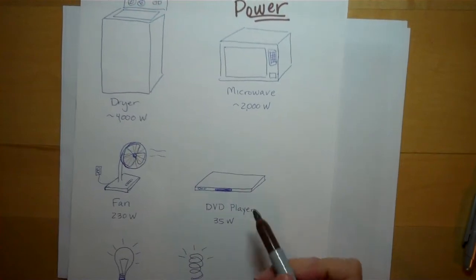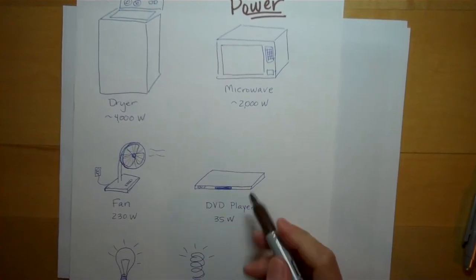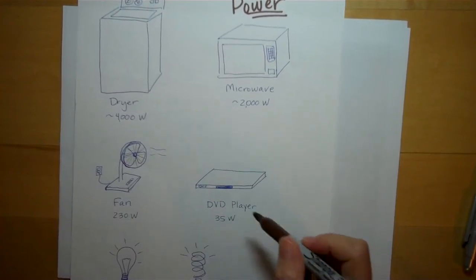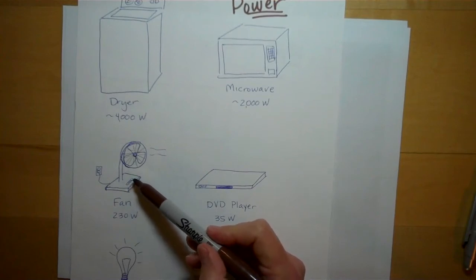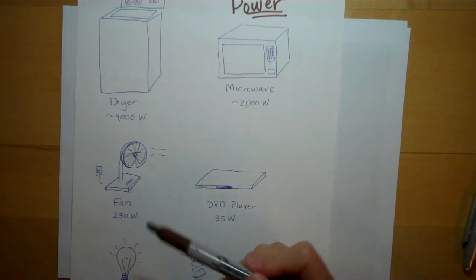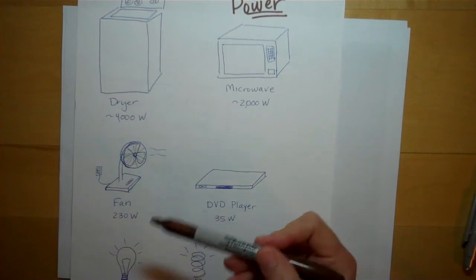It only needs 23 watts of power in order to supply the same amount of light. A DVD player, not much. 35 watts of power because it's just spinning a little thing. A big table fan, significantly more if it's running on high. I have 230 watts here. It can vary.